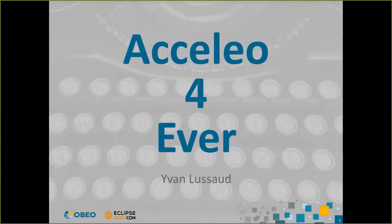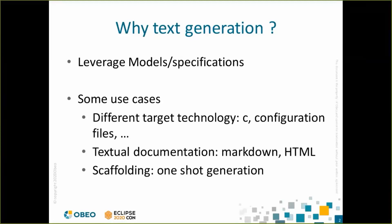The main idea of text generation is to leverage existing models or specifications to produce code or documentation. It can be useful when the targeted technology is different from the Java environment, for instance C-language or configuration files. It can also be useful to document existing models using Markdown or HTML. Another use case can be a one-shot generation to scaffold future developments.